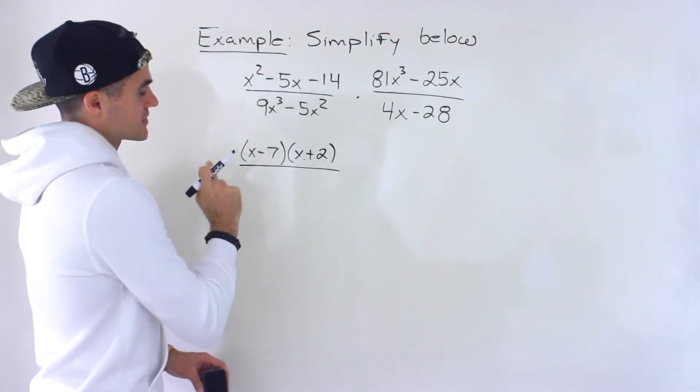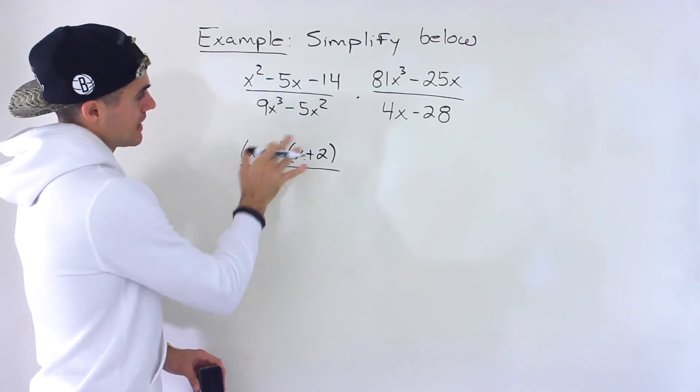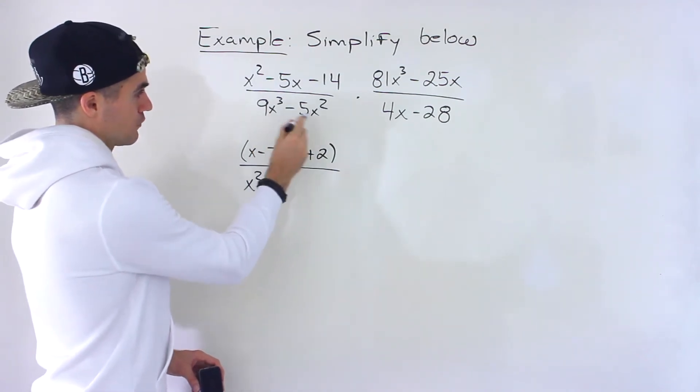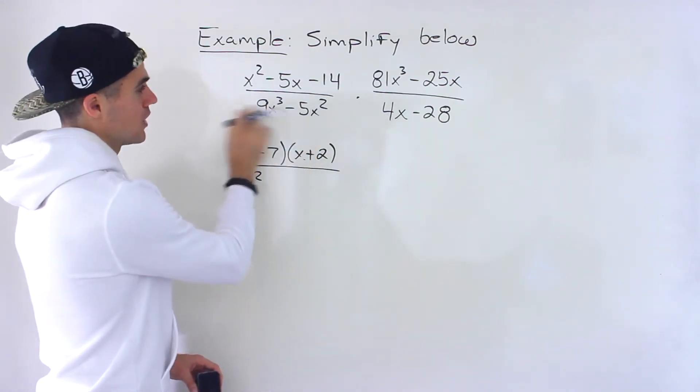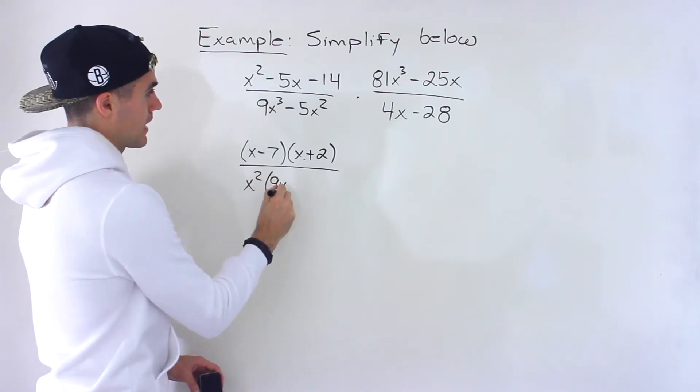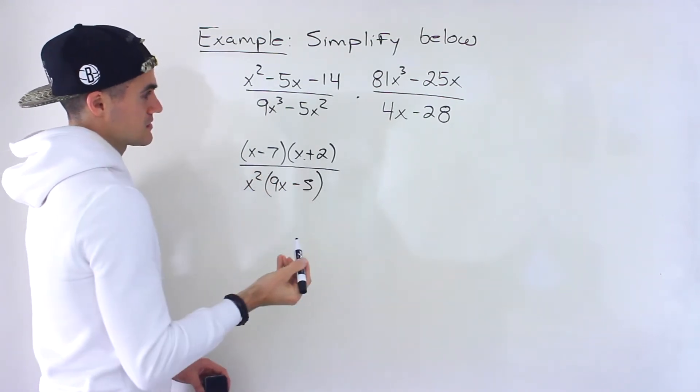9x cubed minus 5x squared. Notice that we could take out an x squared from both expressions. There's no number that we could take out. But if we take out an x squared, we'd be left with 9x minus 5.